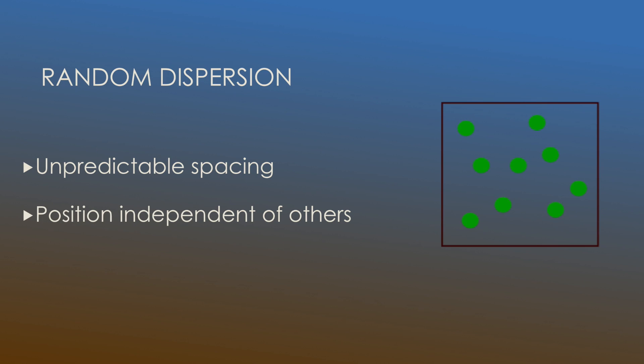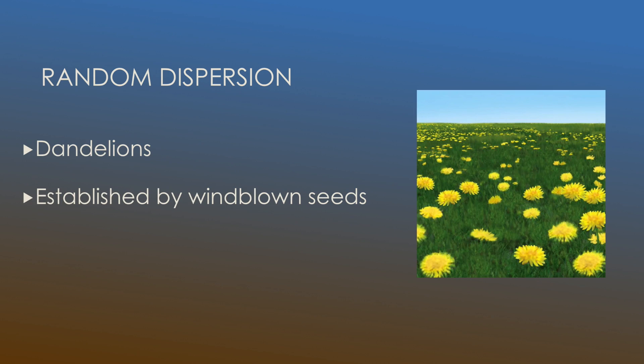Lastly we have random dispersion and as you can guess this is just unpredictable spacing where individuals will be positioned independent of the other. So it's generally going to be random. No matter where one individual is, an individual can be clumped on top of it or it could be five miles away. As you could see in that picture that's what it shows and the most common example of this is dandelions.